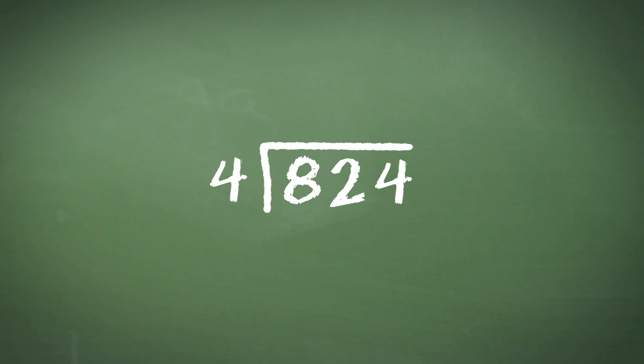So firstly, we do 8 divided by 4, which gives us 2, and we write that in directly above the 8.